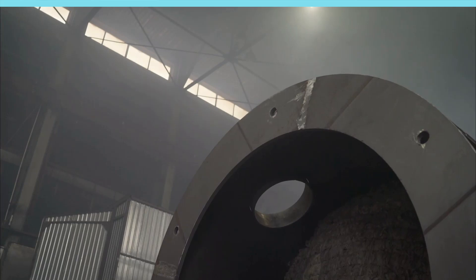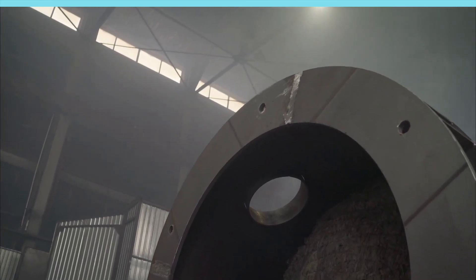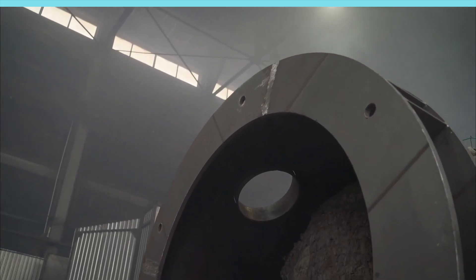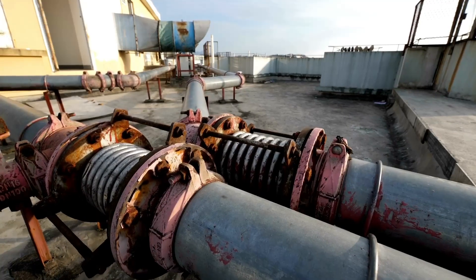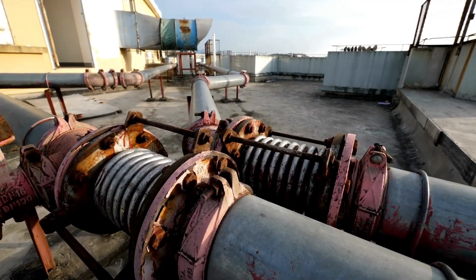Since the manufacture of tubes results in uniform outer diameters that are better for a correct fit-up in the weld head, orbital welding is more frequently used on tubing than on pipes.